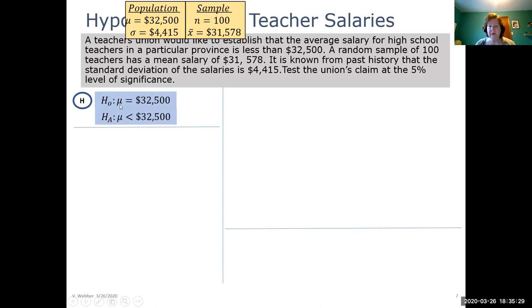Please notice the population parameters in both, the population value is in both, the equal is in the null hypothesis, and the type of test is in the alternative.